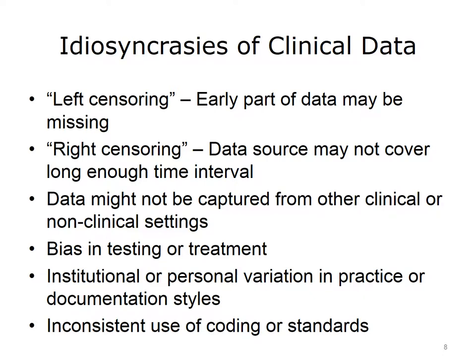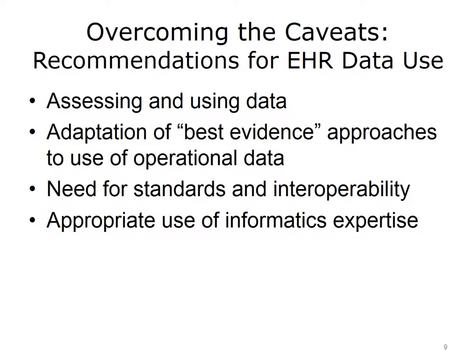What are the idiosyncrasies of clinical data? Revisiting censoring, where some data is missing: there may be left censoring, where the early part of the data is missing — for example, the first instance of a disease in a record may not be when the disease was first manifested, perhaps because it was not yet diagnosed. There is also right censoring, where the data source may not cover a long enough time interval to cover the entire time course of the patient and their disease. Data might not be captured from other clinical or non-clinical settings, such as other hospitals or health systems, or may not be available at all, as with over-the-counter drugs. There may be biases in how clinicians test or treat patients, institutional or personal variation in practice or documentation styles, and inconsistent use of coding or other standards.